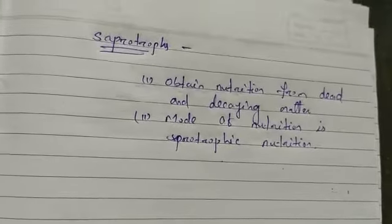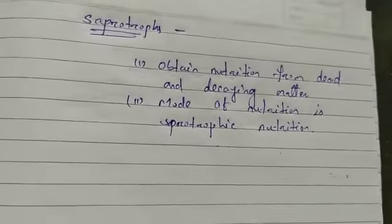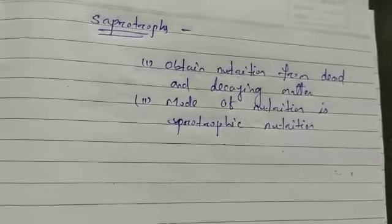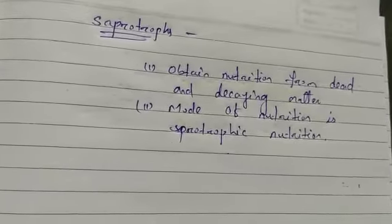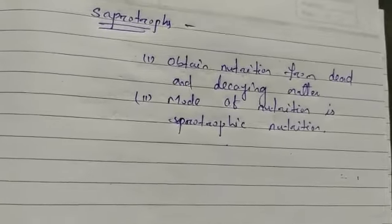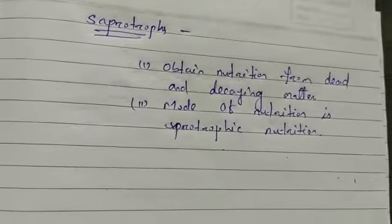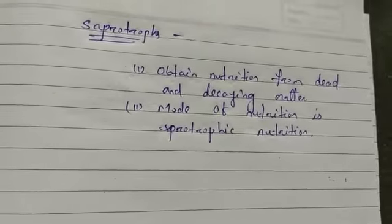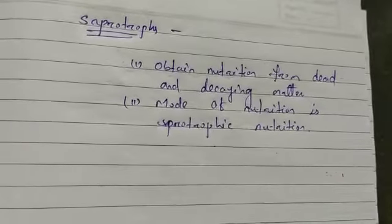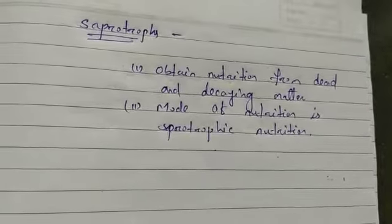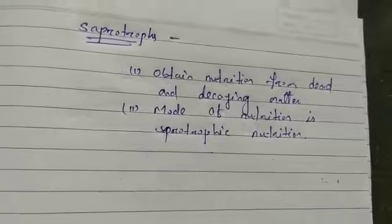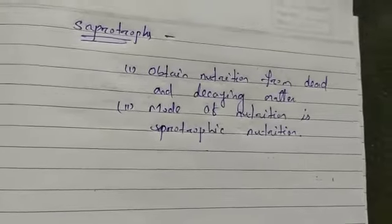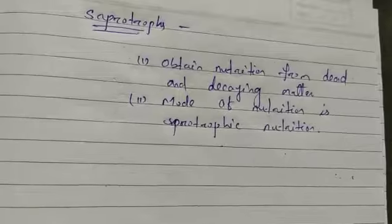At the same time, when they are decomposing the dead bodies of other organisms, they release some vital chemical elements into the soil. These vital chemical elements are absorbed by autotrophs. So they are involved in recycling of materials from dead organisms to living ones, which is why they are called decomposers.